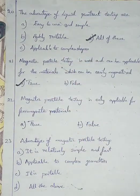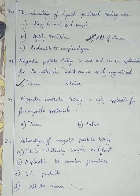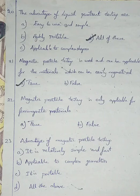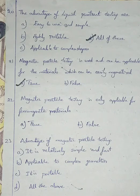Question number 22. Magnetic particle testing is only applicable for ferromagnetic materials — true or false? Magnetic particle testing is only applicable for ferromagnetic materials; it cannot be applied for paramagnetic and diamagnetic materials. So I am going with option A, true.